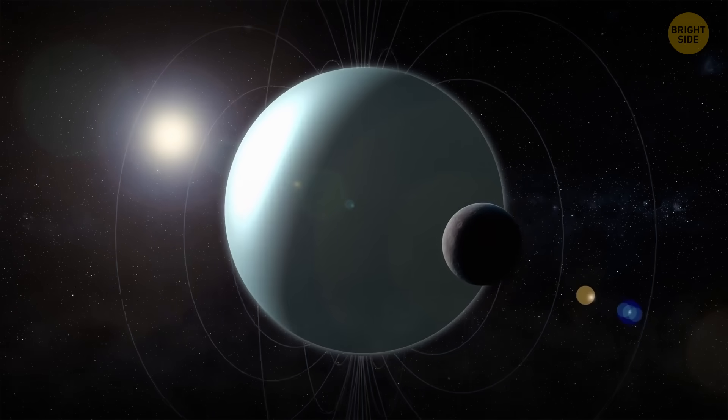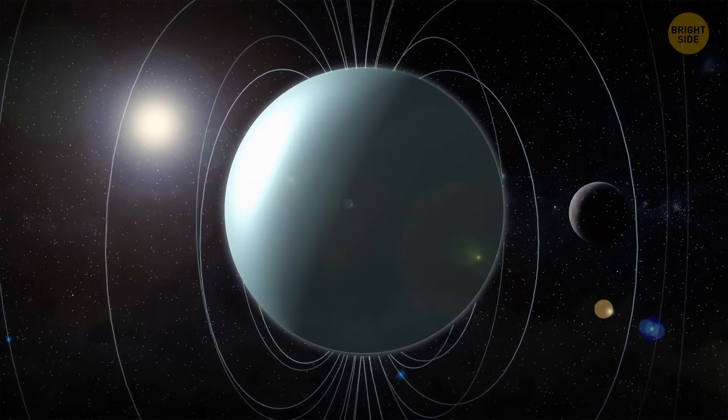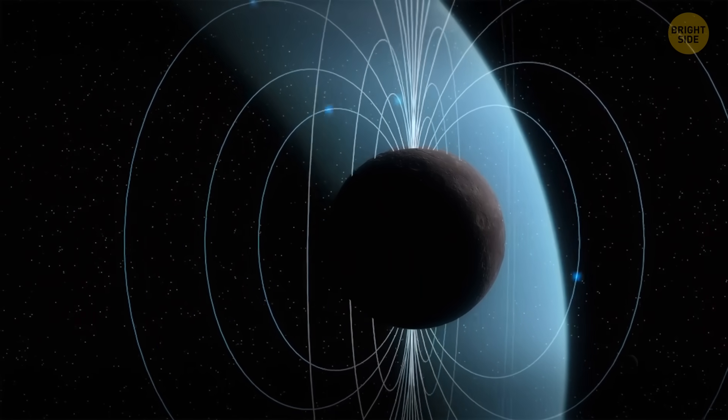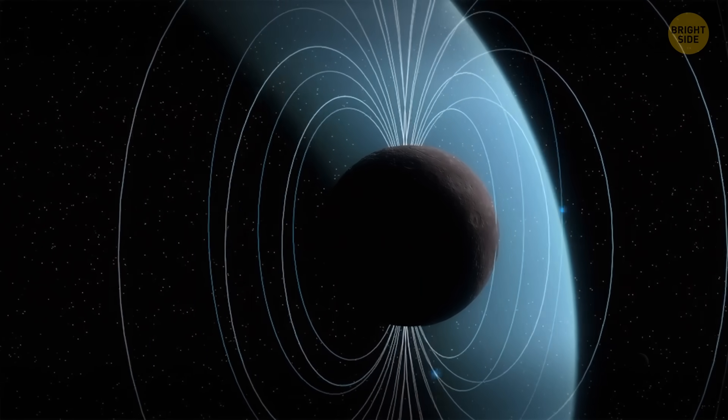As a moon moves around a planet, the magnetic field of that planet tugs at it. That is how the moon stays in its orbit. This tug generates an electrical current that transforms into a magnetic field.